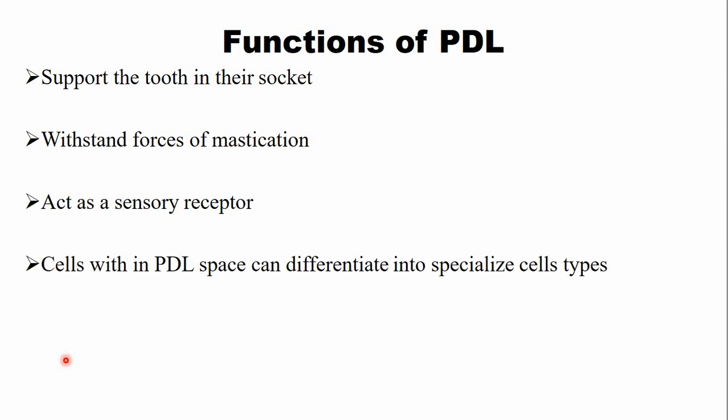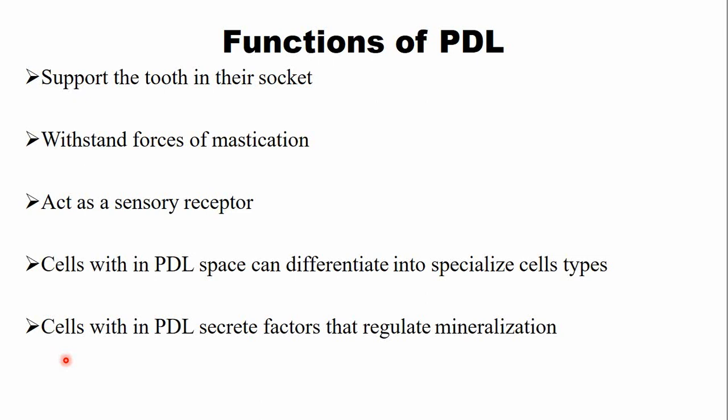There are numerous cell families associated with the PDL. Those cells may differentiate into specialized cell types like cementoblast, osteoblast, or fibroblast. Cells in the PDL space secrete factors that regulate mineralization — for example, fibroblasts secrete some factors that regulate mineralization. Due to this regulation, the fusion of cementum with the bone is prevented. This fusion between cementum and bone is known as ankylosis.